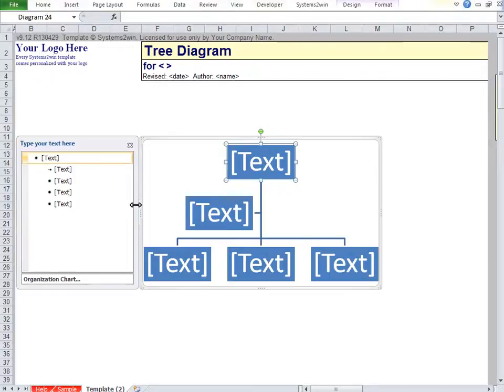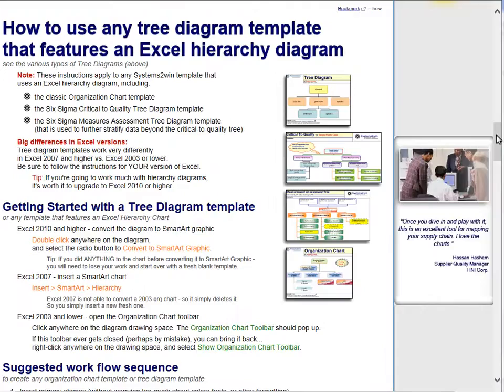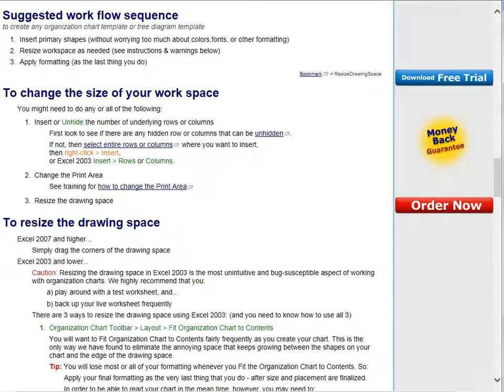So let's go back to our online instructions and scroll down where we learn how to change the size of our workspace. Now with the Systems2win template, you hardly ever have to fool around with the print area, so there's only two things you're really thinking about: How many rows or columns do you have exposed, and what's the size of the drawing space? Let's go do it.